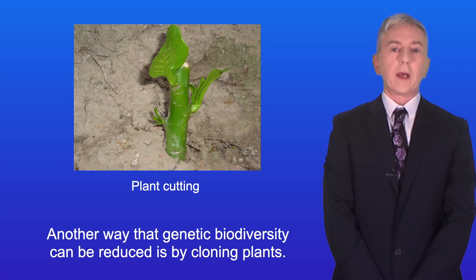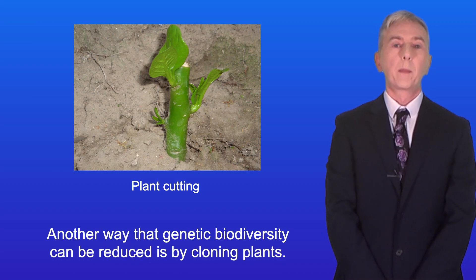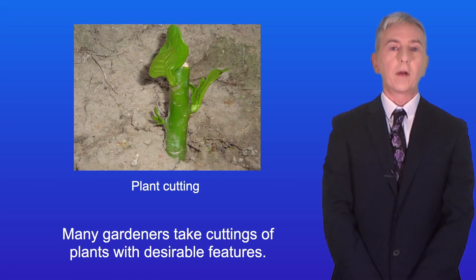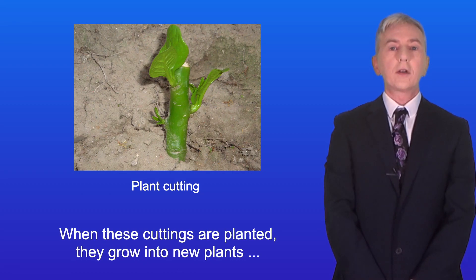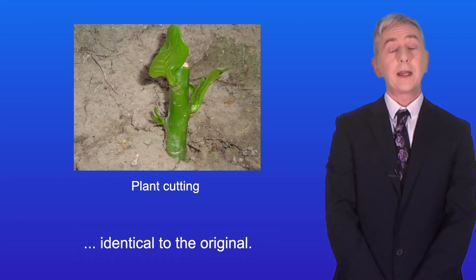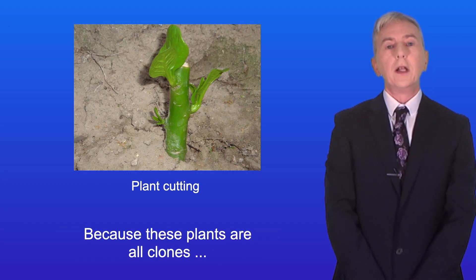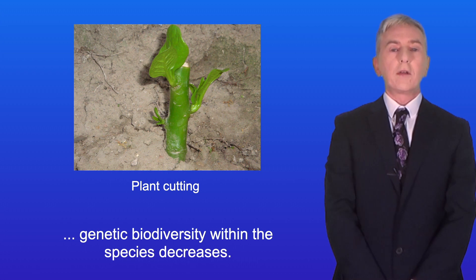Another way that genetic biodiversity can be reduced is by cloning plants. Many gardeners take cuttings of plants with desirable features. When these cuttings are planted they grow into new plants identical to the original. Because these plants are all clones, genetic biodiversity within the species decreases.